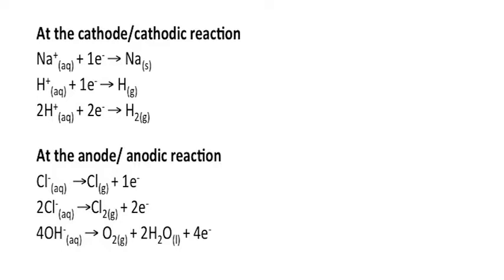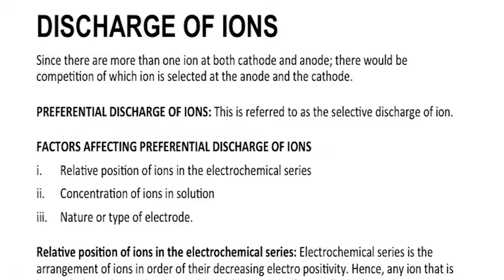Since two ions — either positive or negative — cannot go to the cathode or anode at the same time, there is a need for preferential discharge of ions. Preferential discharge of ions is the selective discharge of ions. The factors that affect preferential discharge include: the relative position of ions on the electrochemical series, the concentration of ions in solution, and the nature or type of electrode.